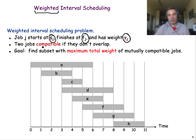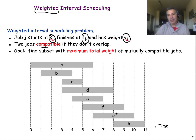Two jobs are compatible only if they don't overlap in time, because the idea is that we have only one machine, one server, and that server can execute only one job at a time. So in this case, we do not try to find the maximum number of jobs we can schedule. We're trying to find the subset of jobs that will give us the maximum total weight.